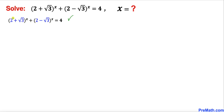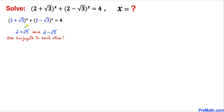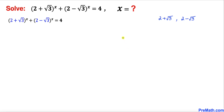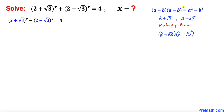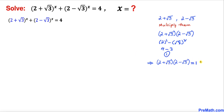Let's investigate these bases: 2 plus square root of 3 and 2 minus square root of 3. We can see that both of these bases are conjugate to each other. When we multiply them, this is a product of a sum and a difference, so we apply the well-known identity: 2 squared minus (square root of 3) squared equals 4 minus 3, which gives us simply 1.